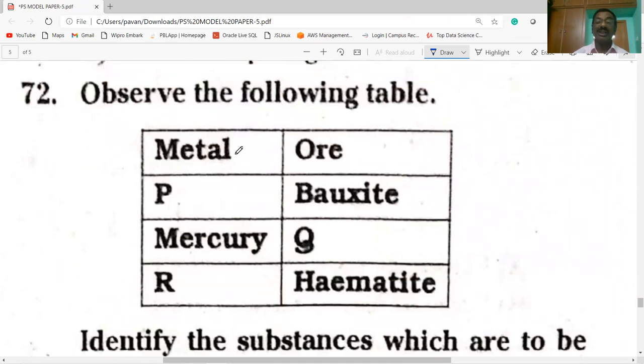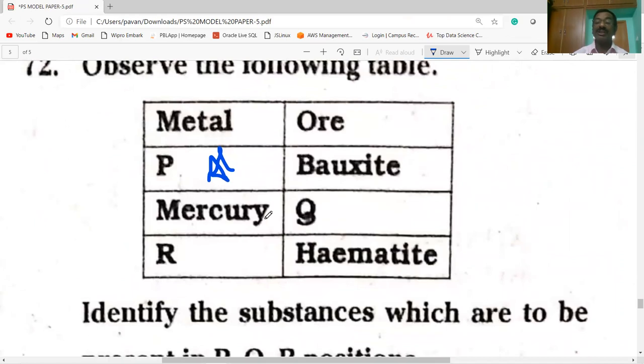Observe the following table. Metal: bauxite is the ore of aluminum. Mercury is the ore of cinnabar. Hematite is the ore of iron.